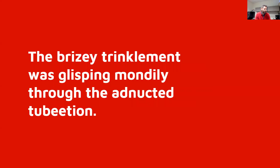Let's look at an example sentence: 'The breezy trinklement was glipsing mondally through the abnuchted tibution.' Take a moment and think about this — imagine in your mind this breezy trinklement. What is it doing? It's glipsing mondally through the abnuchted tibution. Sure enough, you've realized these are not English words, but all of these made-up words are our form class words. We can see we've got a couple of nouns in green, a couple of adjectives in yellow, a verb in the present participle in blue.